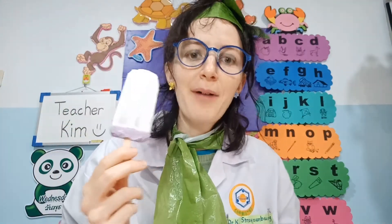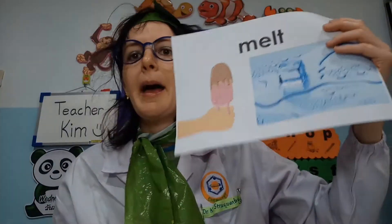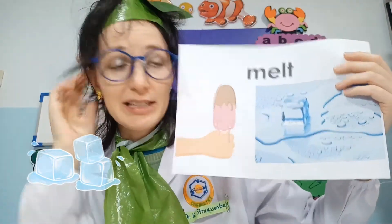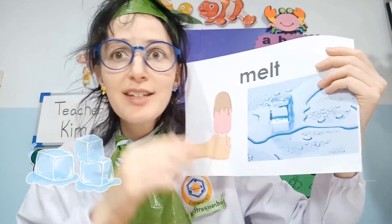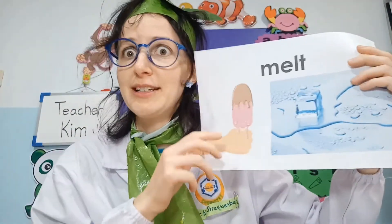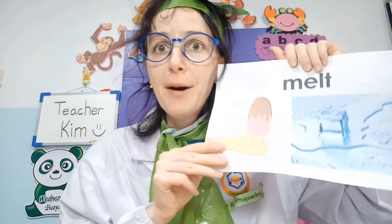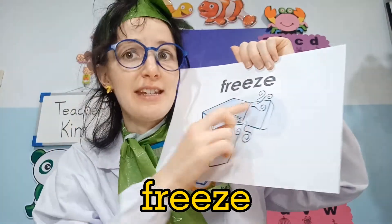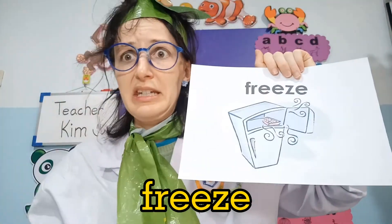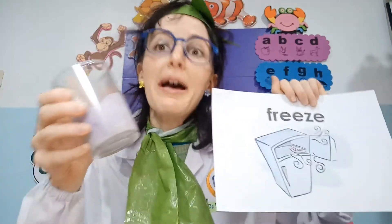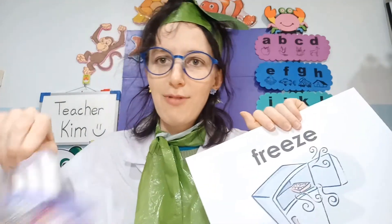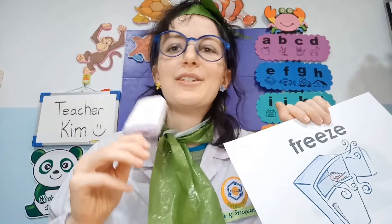If I leave my popsicle out, it will melt. The ice cube can also melt — solids often can melt into a liquid. But I can go back by freezing. My popsicle is all melted, but I can put it back into the freezer, and voila — I have my delicious popsicle again.